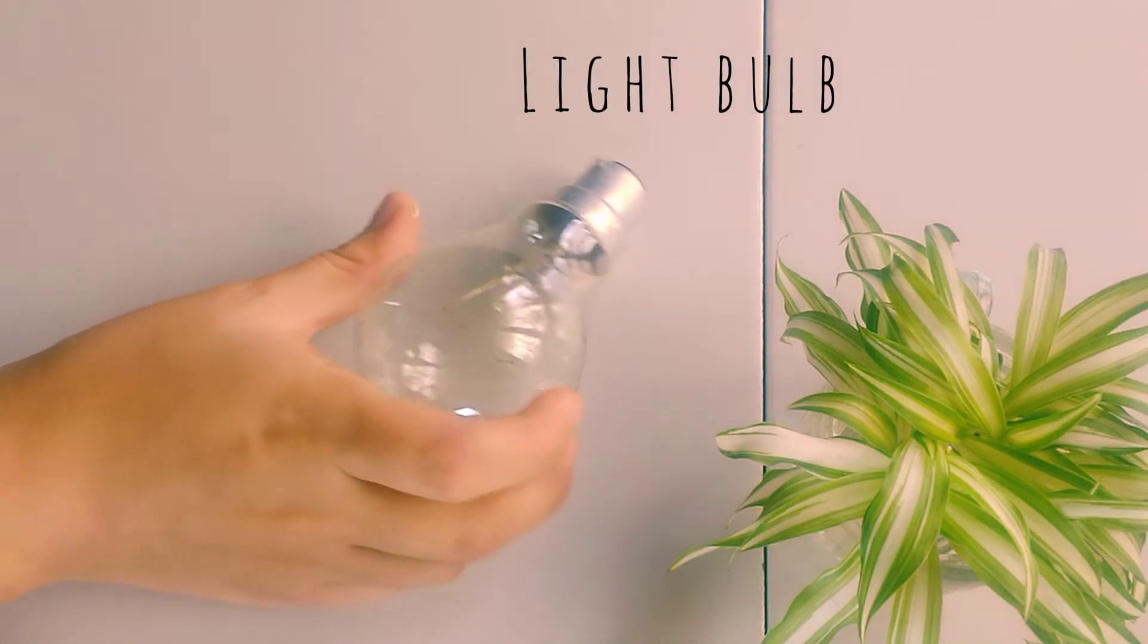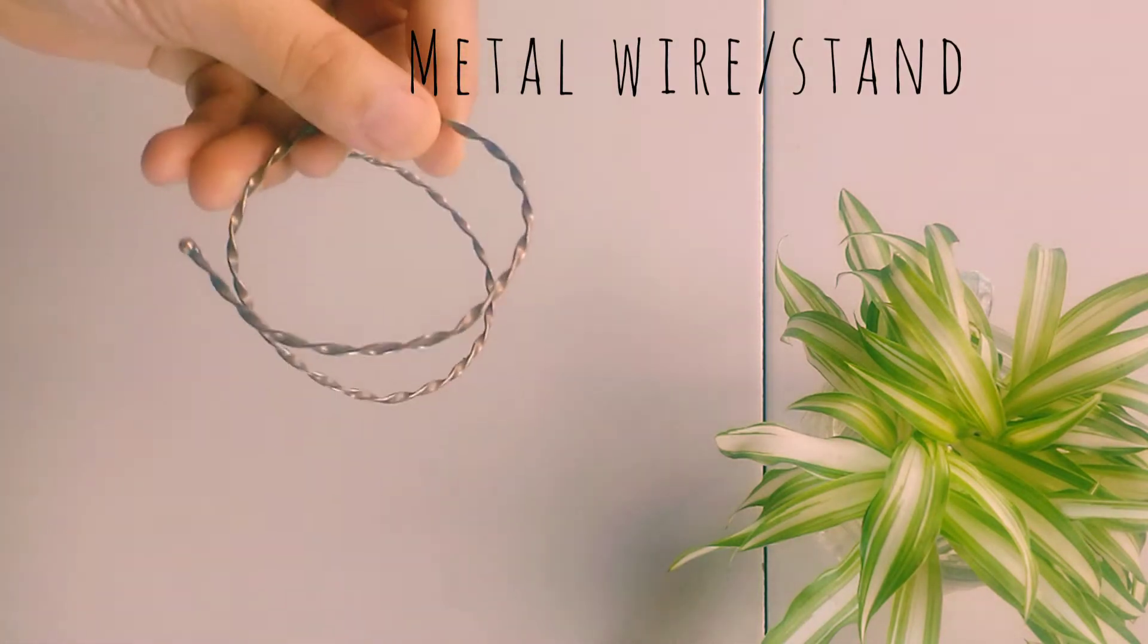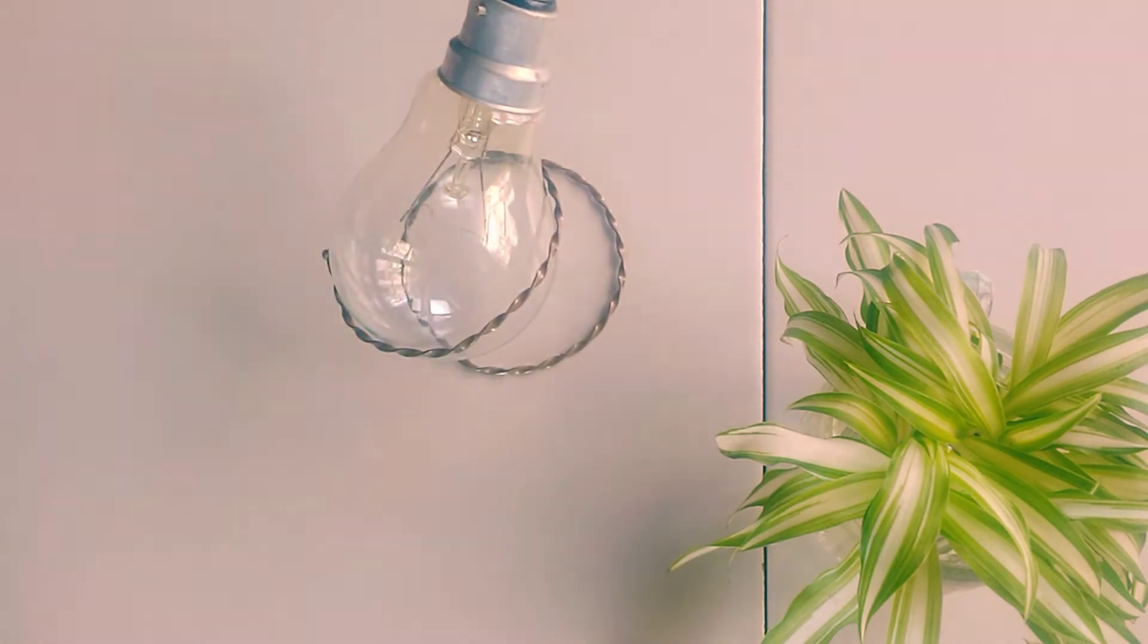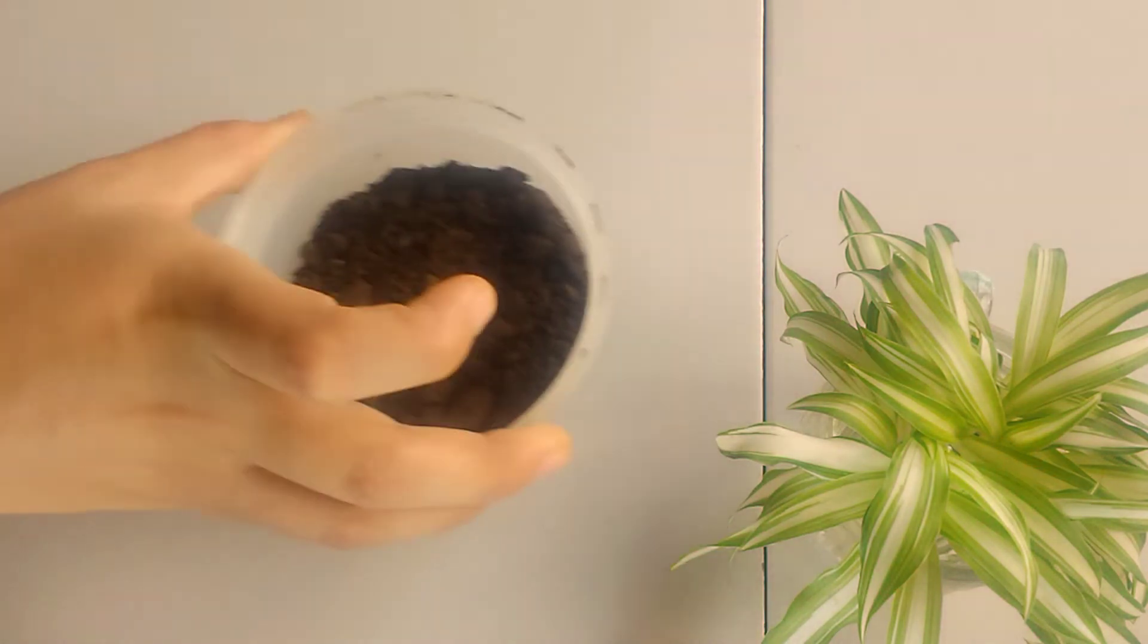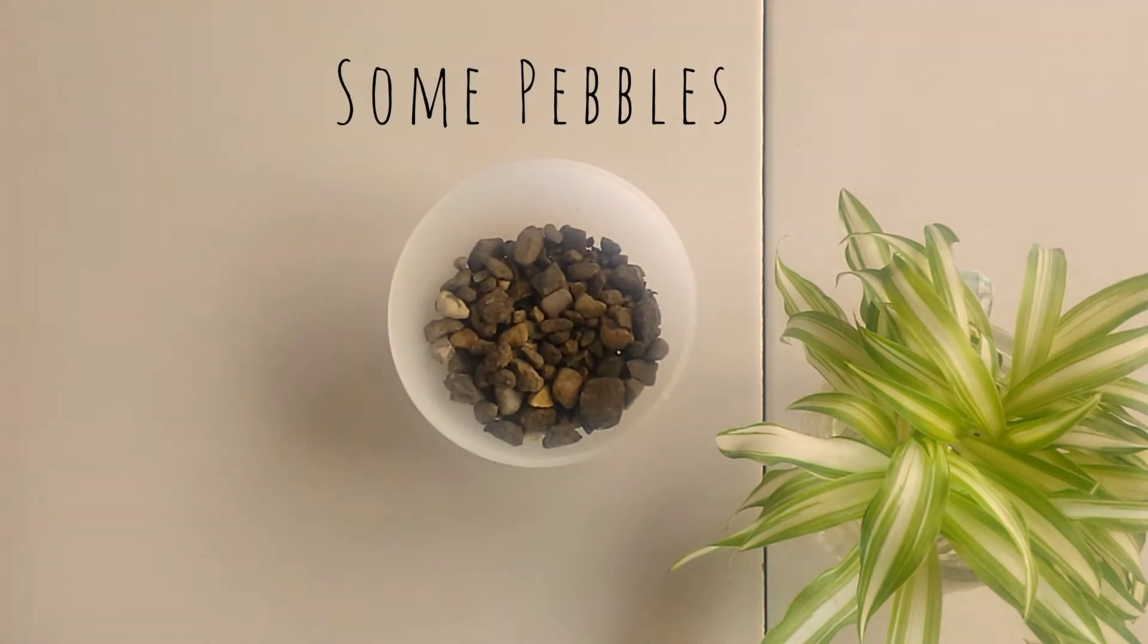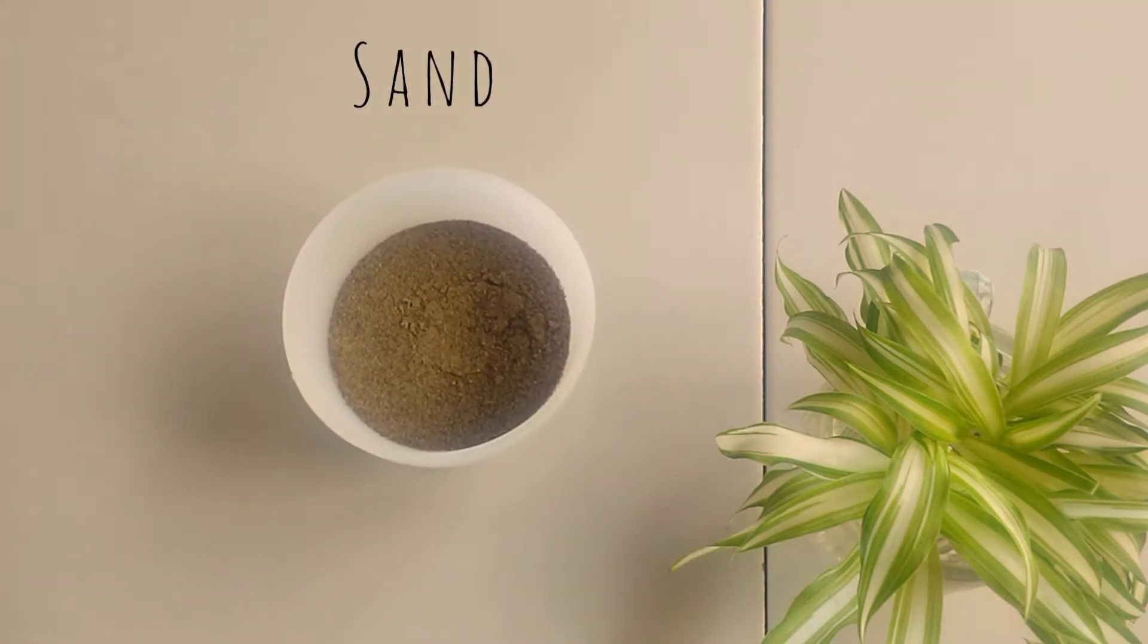The things we will be needing are of course a light bulb and a stand. It's a hairband, an old hairband which I have molded into shape which will hold the light bulb like this. Garden soil, some pebbles, sand, garden moss.